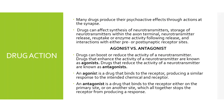Let's differentiate agonists versus antagonists. An agonist is a drug that binds to the receptor and produces a similar response — it boosts and enhances the activity of a neurotransmitter. An antagonist is a drug that binds to the receptor site, either on the primary site or on another site, and helps stop the receptor from producing a response — it reduces the activity of a neurotransmitter. Both are involved in drug action.